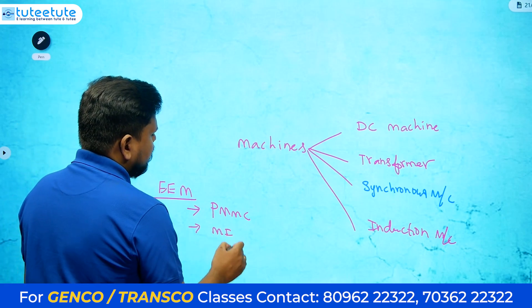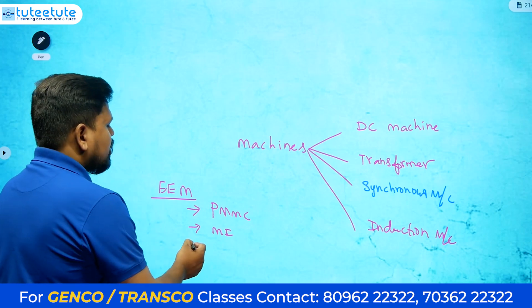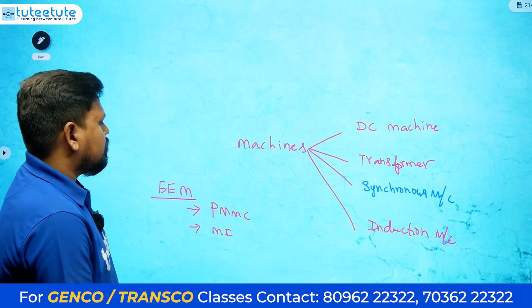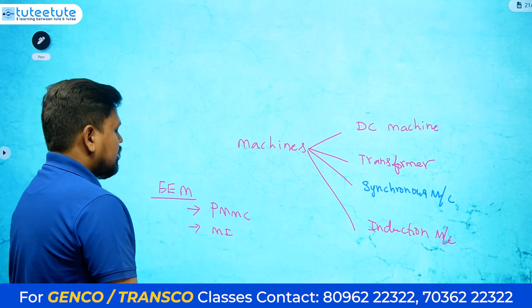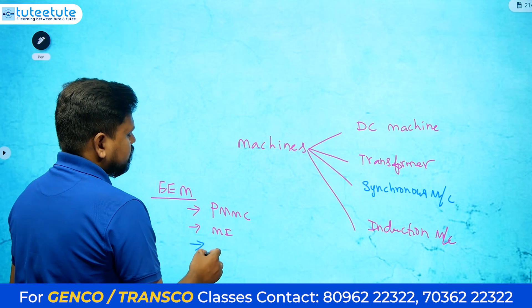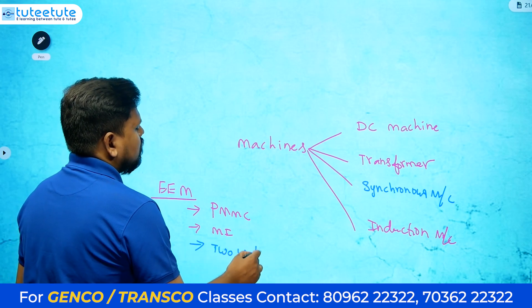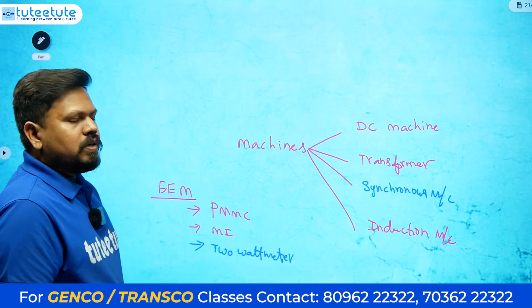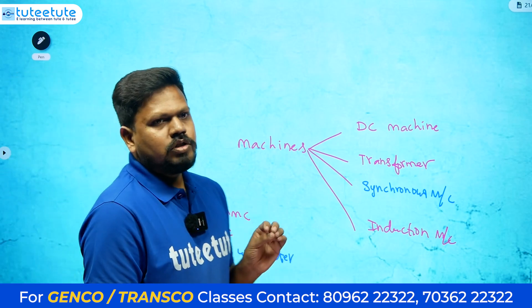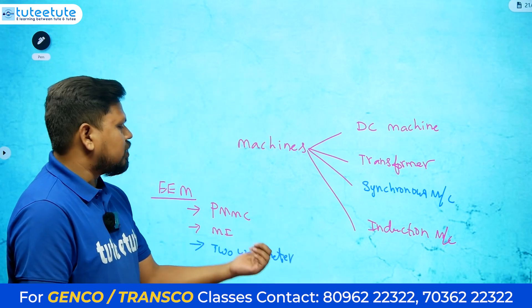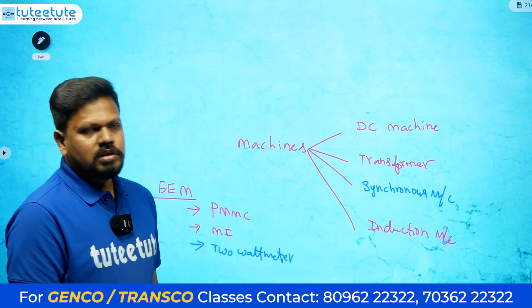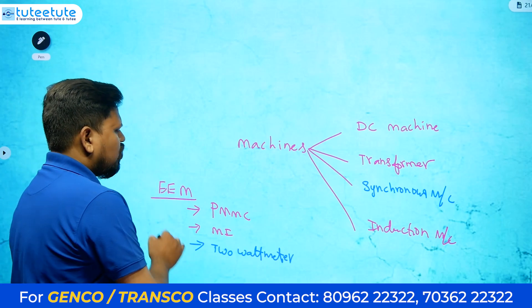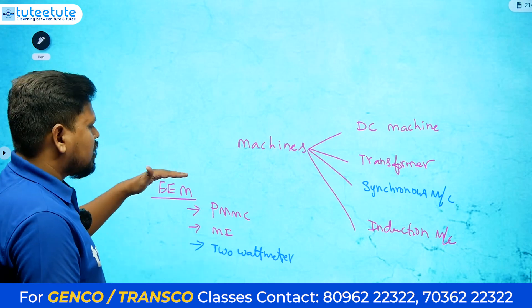After PMMC, focus on the moving iron type instrument — they can definitely give questions on this. The dynamometer type instrument is also there but may not receive much importance in the exam. The two-wattmeter method is not that important from a mechanical point of view, but they may give a question on it. Just remember three or four formulas and you can easily get the mark.